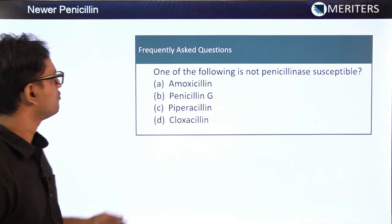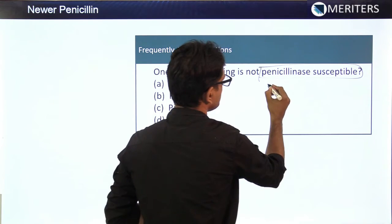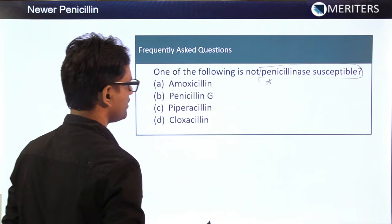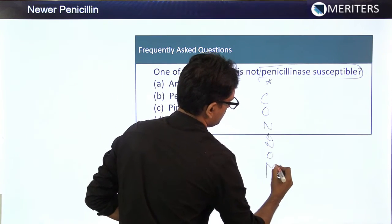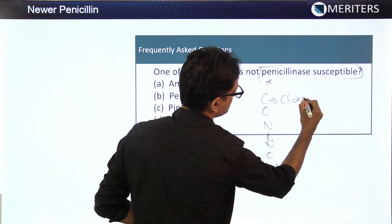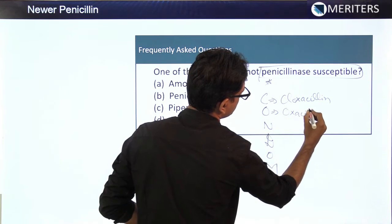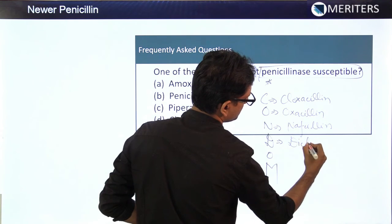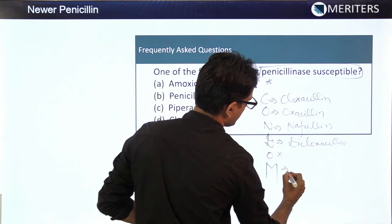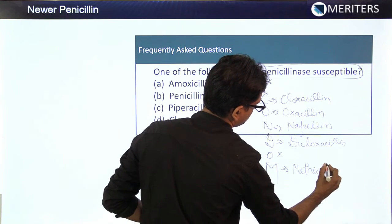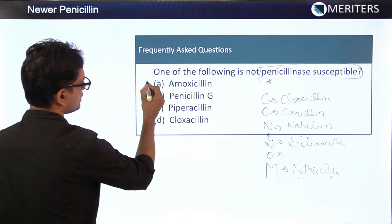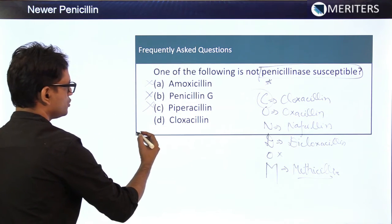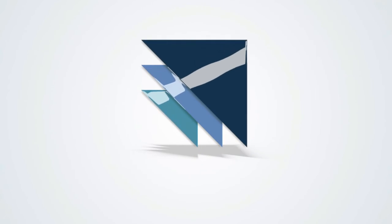The next question: Which of the following is NOT penicillinase susceptible? Using the CONDOM mnemonic — C for cloxacillin, O for oxacillin, N for nafcillin, D for dicloxacillin, O no meaning, M for methicillin — these are penicillinase-resistant. Given options of amoxicillin (susceptible), Penicillin G (susceptible), piperacillin (susceptible), and cloxacillin, the correct answer is cloxacillin, as it is in the CONDOM mnemonic.